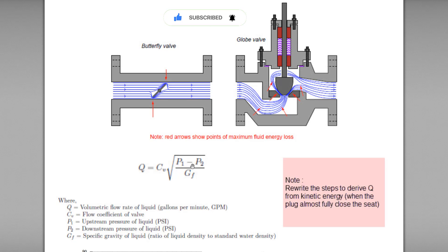This is a formula for the volumetric flow rate of the liquid. Q stands for volumetric flow rate of liquid in gallons per minute unit. P1 minus P2 is differential pressure where P1 stands for upstream pressure of liquid in psi. P2 is the downstream pressure of liquid in psi. While GF is a specific gravity of liquid which is the ratio or division between the liquid density to standard water density.